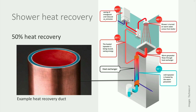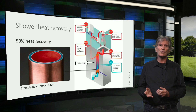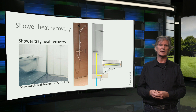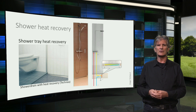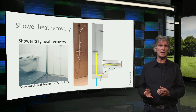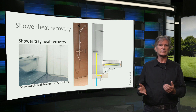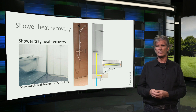This shower heat recovery can be easily installed if the shower is on the first floor. There are also systems where the heat recovery is embedded in the shower tray, as you can see here. The heat recovery only works when the inlet and flushing of warm water is at the same time. With a system like this, you can't regain the heat from, for instance, a bathtub or a washing machine.